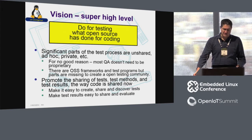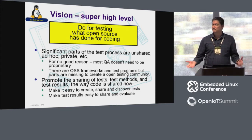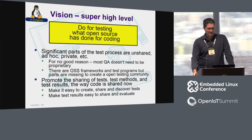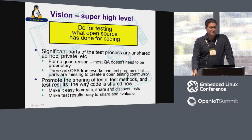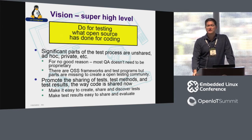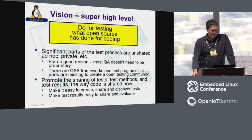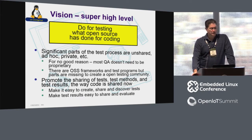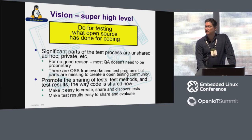If you look around the industry, you see that there are significant parts of the testing process at companies that are still all internal — the QA methodology, the tests themselves. That's not to say there aren't open-source frameworks like Jenkins, Autotest, or Lava, and there are test programs like LTP. But there's still significant pieces of the whole testing QA process that are unshared. Fuego's intention is to address some of this — to promote the sharing of tests, test methods, and test results the way that code is shared now, and make it easy to create, share, and discover tests.